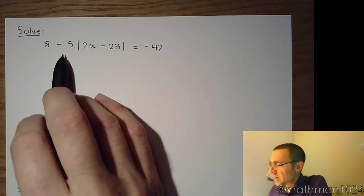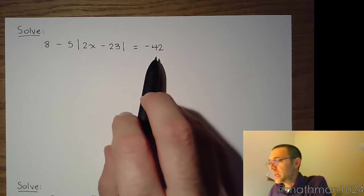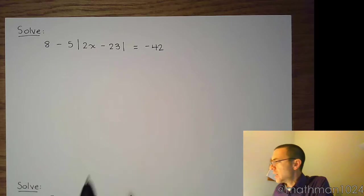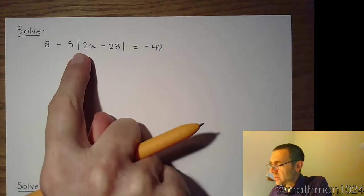8 minus 5 times the absolute value of the quantity 2x minus 23 equals negative 42. Now, since this is an absolute value equation, the first thing you need to do is to isolate the absolute value.